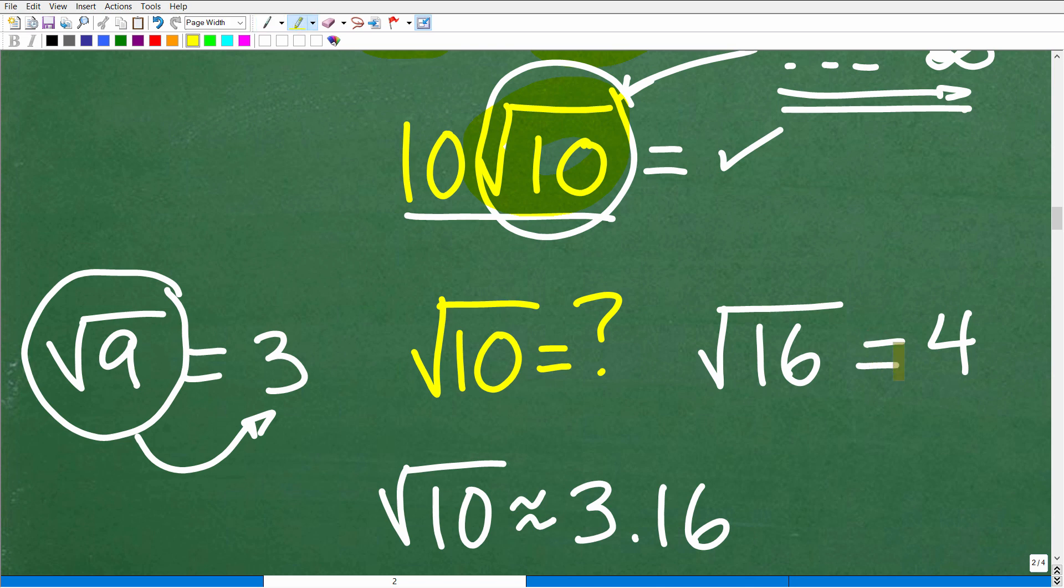And so what's the next number we know? Well, the next number we know would be the square root of 16, right? So the square root of 16 is 4. So between 9 and 16, there are no other perfect square factors. So when we're trying to estimate the square root of 10, what do you think that's going to be? Is it going to be 3.5, 3.9?